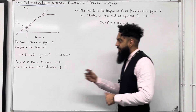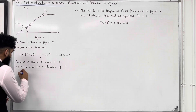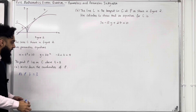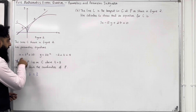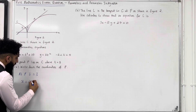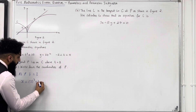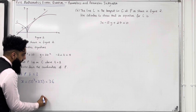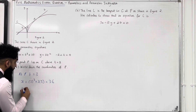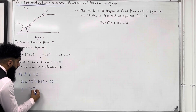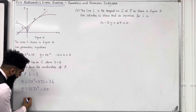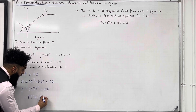Let's have a look at the solution to part A. We know that at P, t equals 3. To find the coordinates of P, we need to substitute t = 3 into the x and y parametric equations. For the x parametric: x = 3³ + 3(3) = 36. For the y parametric: y = 3(3²) = 27. Therefore, the coordinates of P are (36, 27).